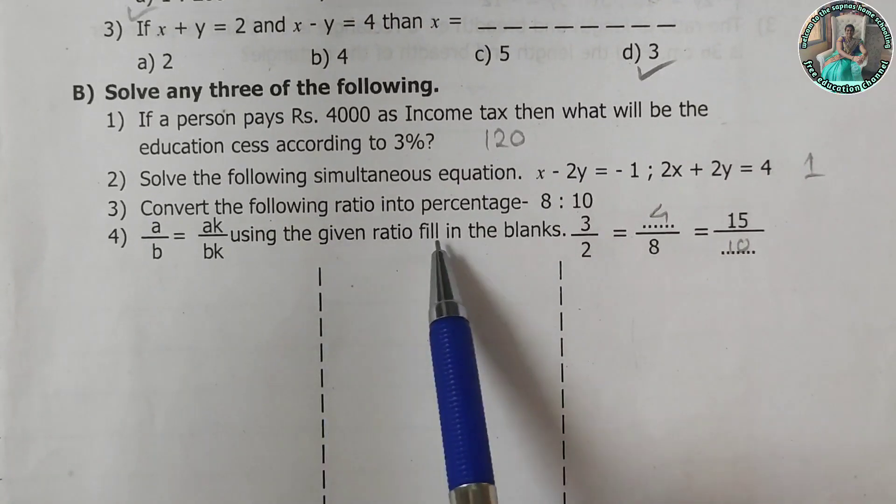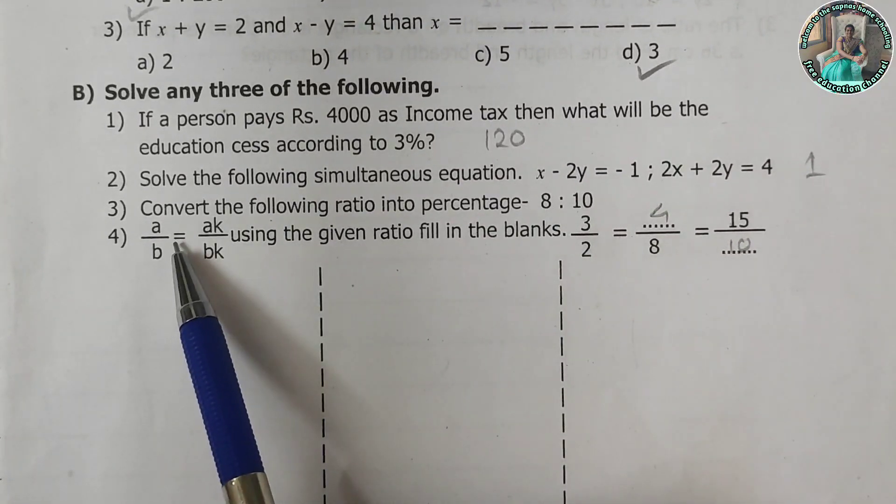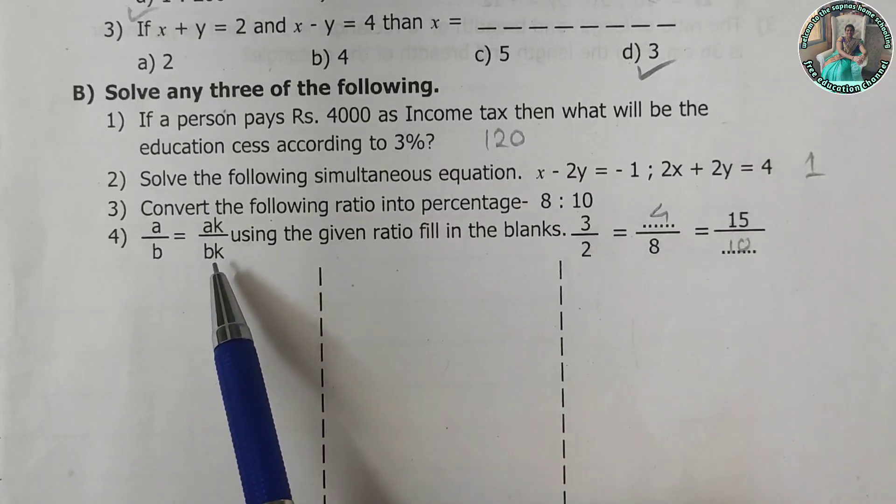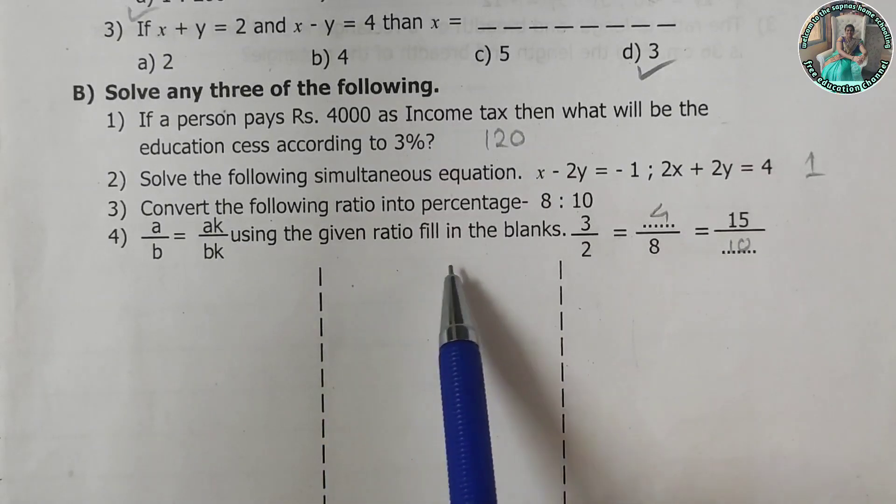Convert the following ratio into the percentage, 8 is to 10. a upon b is equal to ak upon bk using the given ratio. Fill in the blanks.